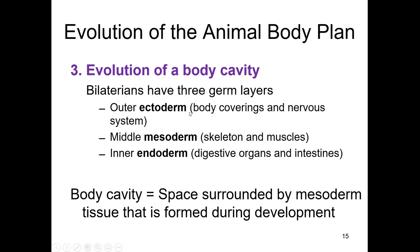You should start to memorize what each germ layer eventually forms into. Ectoderm forms the body covering like skin and the nervous system — all the neurons in the brain for animals that have a brain. Mesoderm becomes a lot of things: skeleton, muscles, and I should also include bone and blood. Endoderm forms all the digestive organs, including intestines. These are the three germ layers in the embryo and a quick list of what those tissues eventually form into.